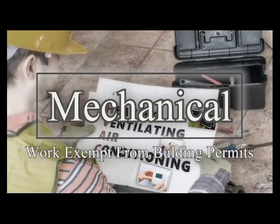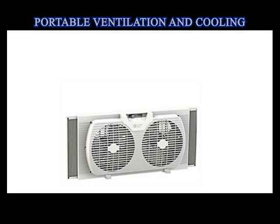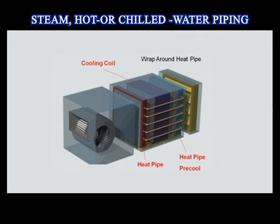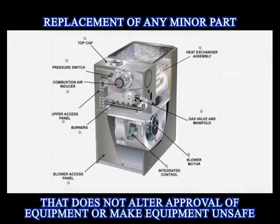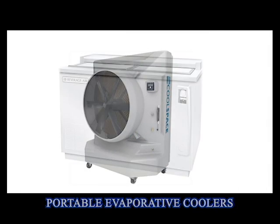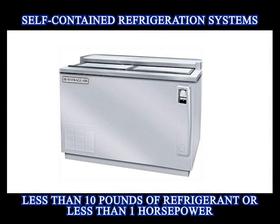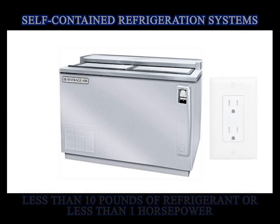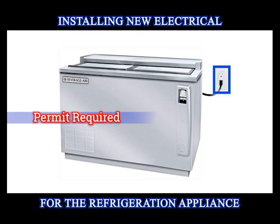Mechanical work exempt from building permits includes portable heating, ventilation, and cooling equipment; steam, hot, or chilled water piping within equipment; replacement of equipment parts; portable evaporative coolers; and residential refrigeration systems. However, if the appliance requires the installation of an electrical receptacle, a permit is required.